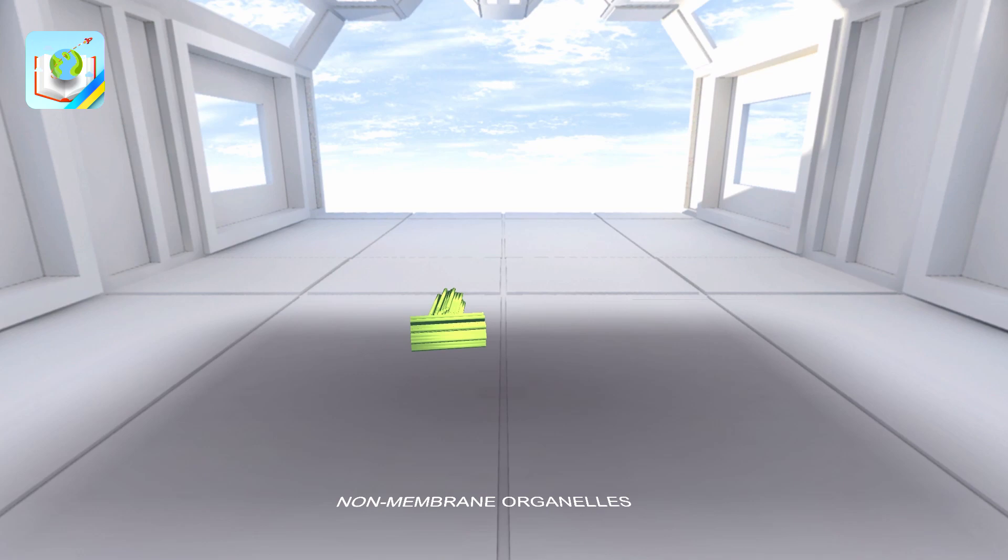All animal and only some plant cells have centrioles. Centrioles participate in the formation of the spindle apparatus. They diverge towards the poles of the cell with the threads of microtubules stretched between them. After parent cells divide, one centriole enters each of the newly formed daughter cells.